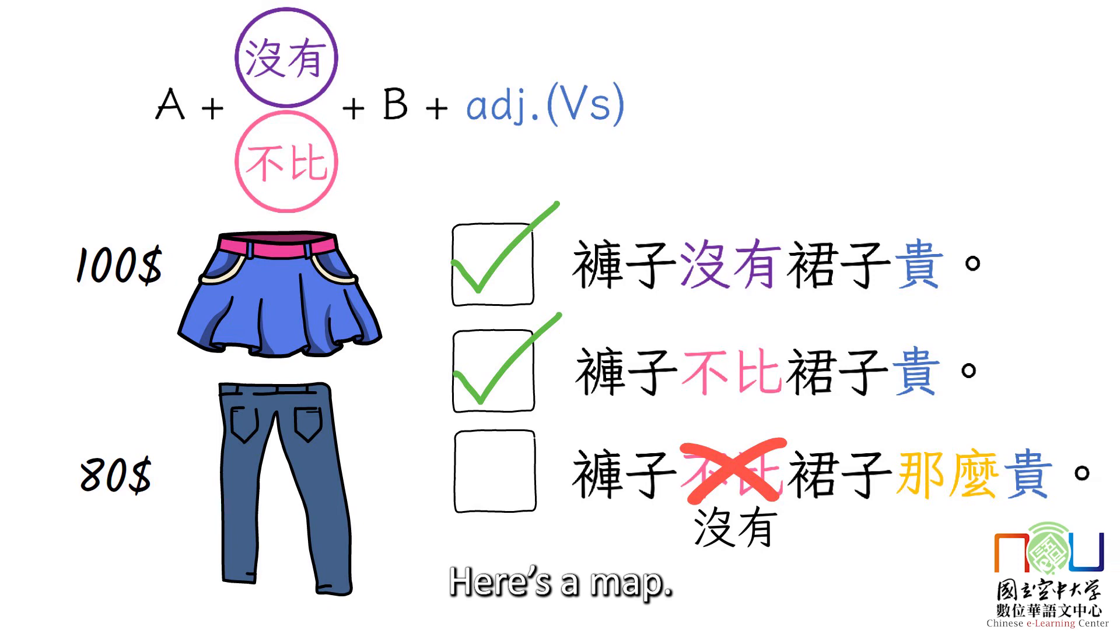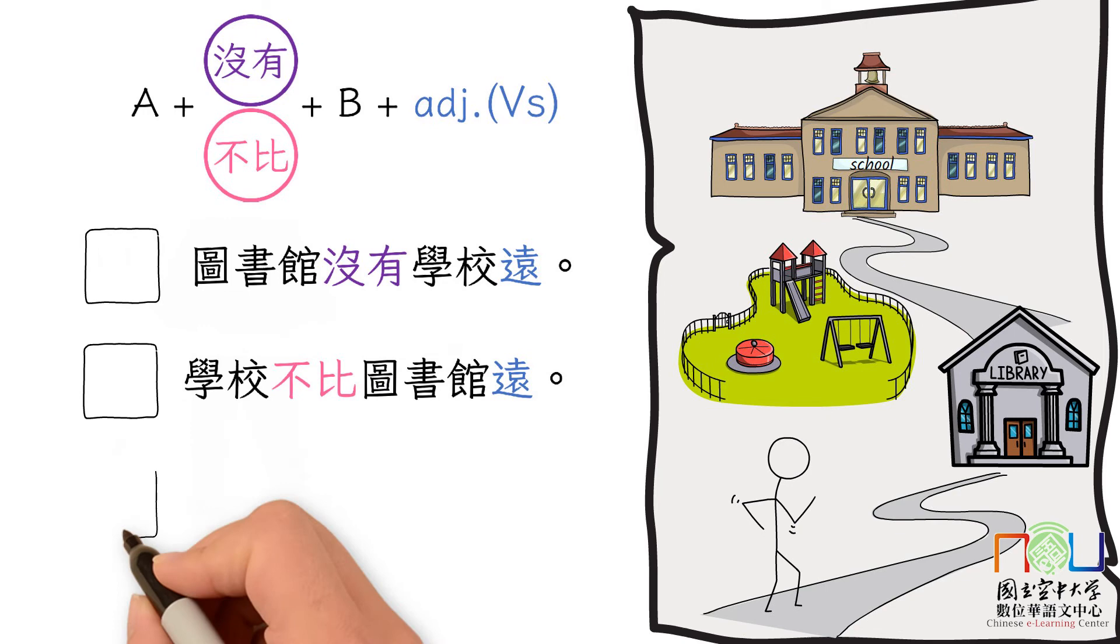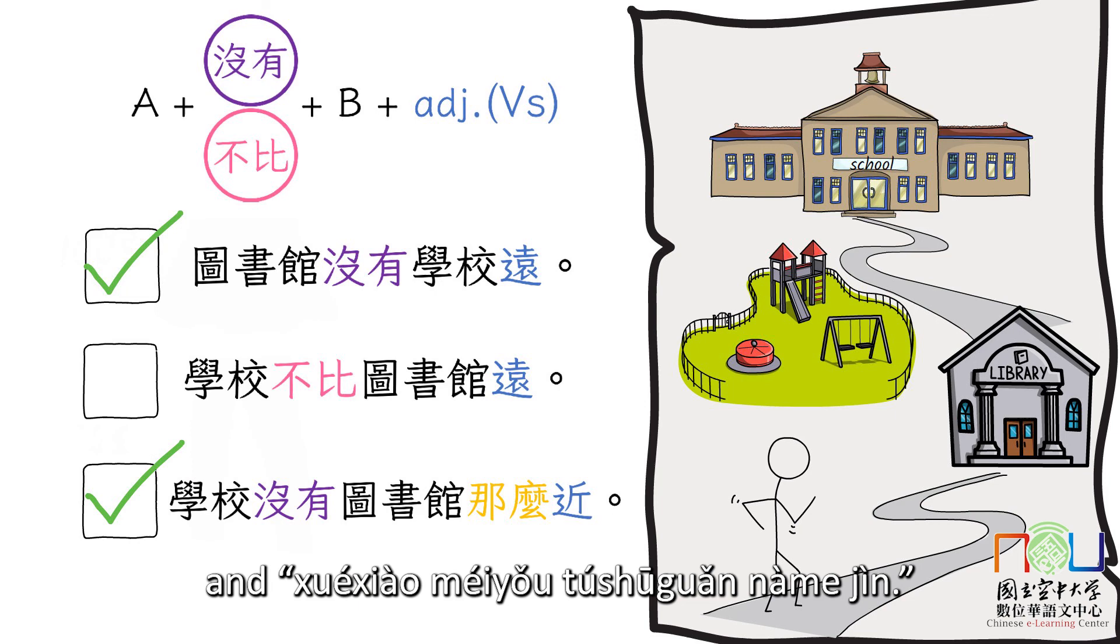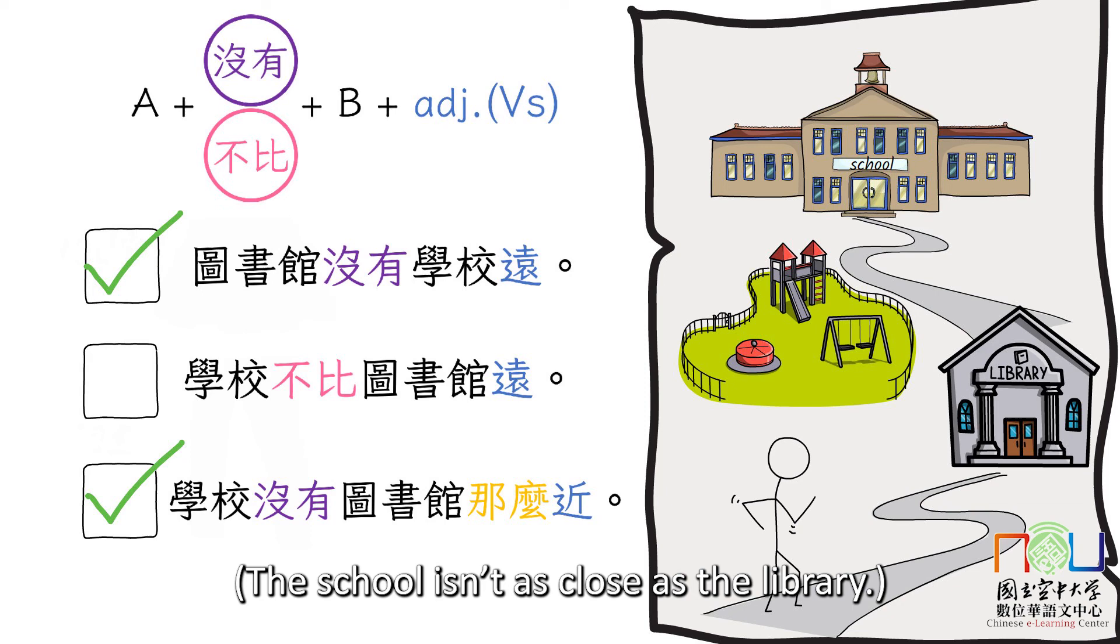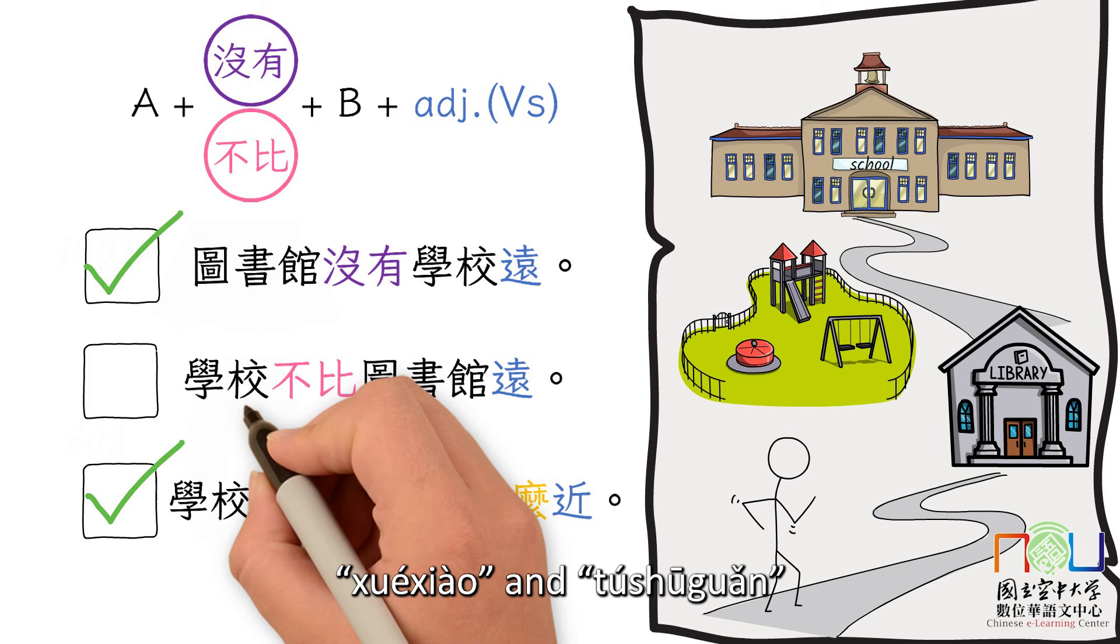Let's try one more. Here is a map. Look at the distances from your house to these two places and select the correct sentences. The answers are 图书馆没有学校远, the library isn't as far as the school, and 学校没有图书馆那么近, the school isn't as close as the library. The second sentence is wrong. 学校 and 图书馆 should switch positions. Got it?